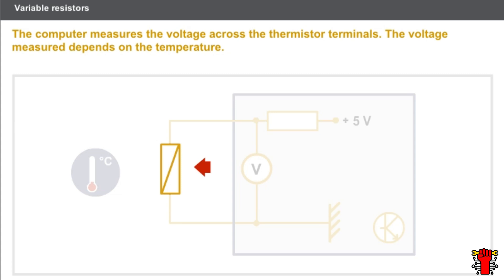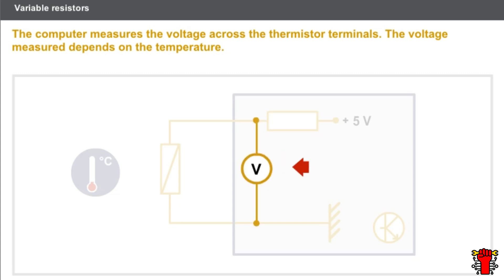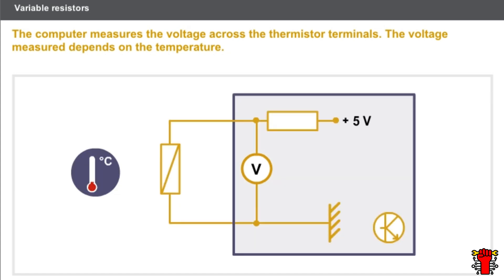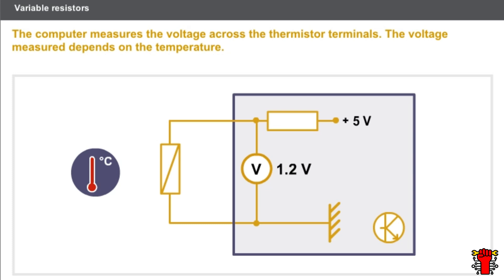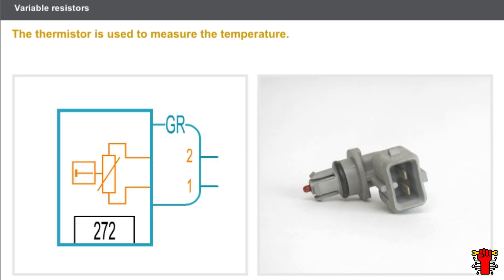Here is a negative temperature coefficient thermostore. This thermostore is mounted in series with a resistor inside the computer. The computer measures the voltage across the thermostore terminals. When the temperature is low, the thermostore's resistance is high, and the voltage measured by the computer is therefore increased. When the temperature increases, the resistance decreases, and the voltage measured by the computer is low. The thermostore is used to measure the temperature.